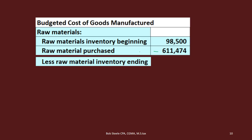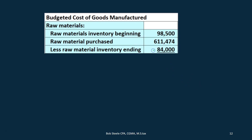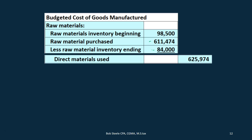Then we're going to have less the raw materials ending inventory. This is similar to the cost of goods sold calculation you would see in a merchandising company — beginning balances plus purchases minus ending balance. We jump back to step three, the raw materials budget. We've got $4,000 units in the ending and $21 per unit, so multiplying those together gives us $84,000. Subtracting out the $84,000: beginning $98,500 plus purchases $611,474 minus ending $84,000 gives us direct materials used of $625,974.